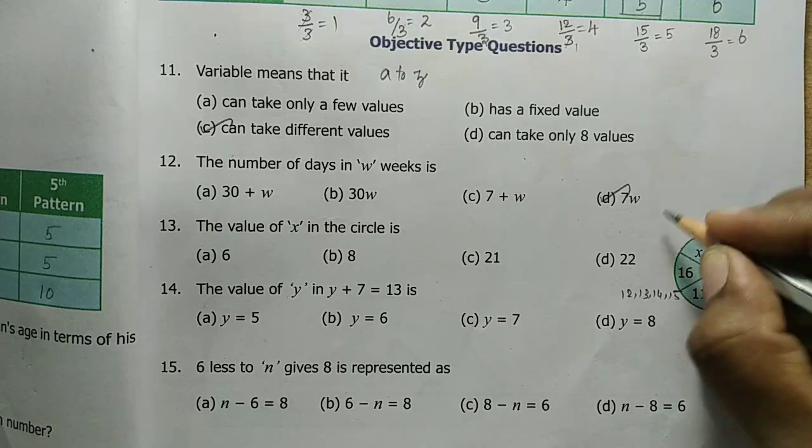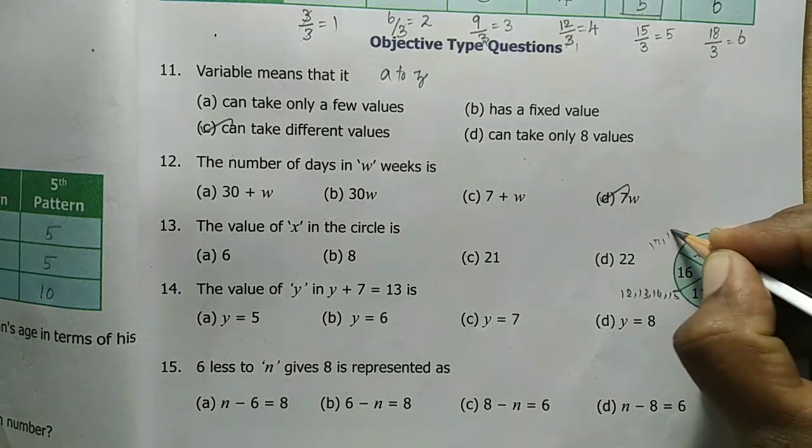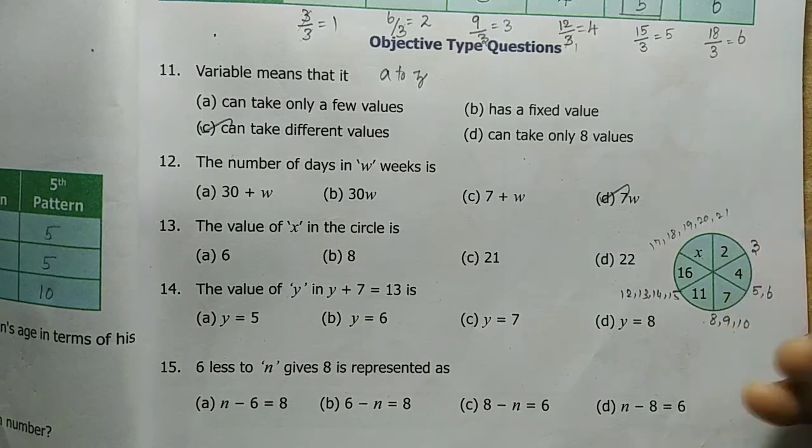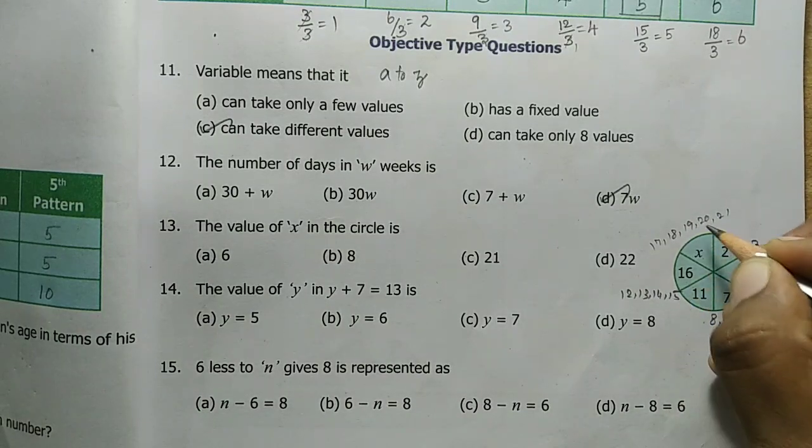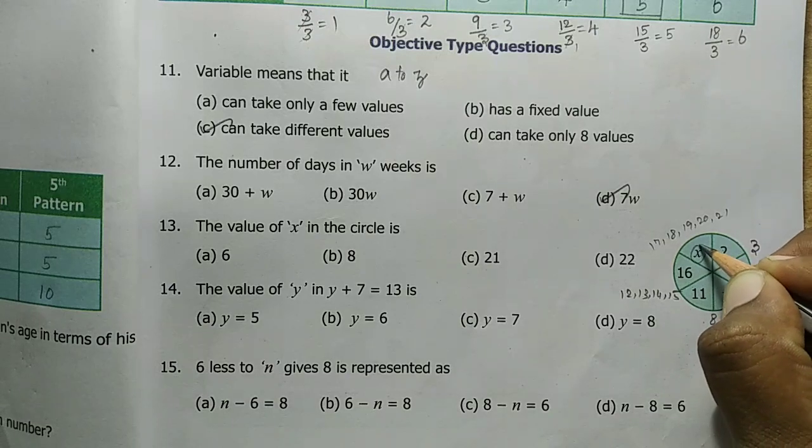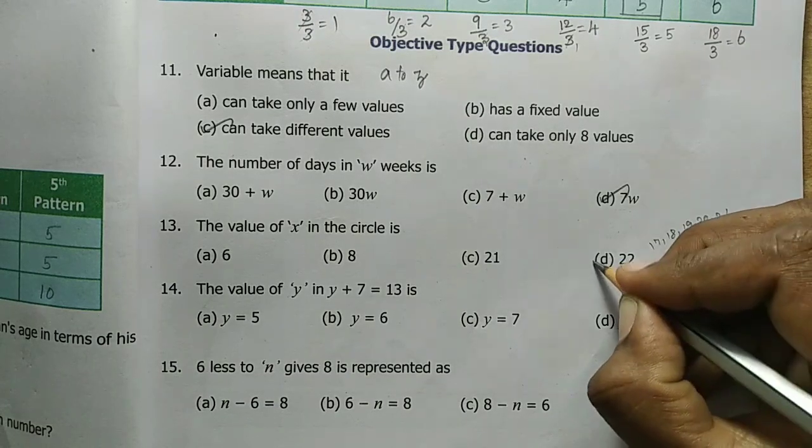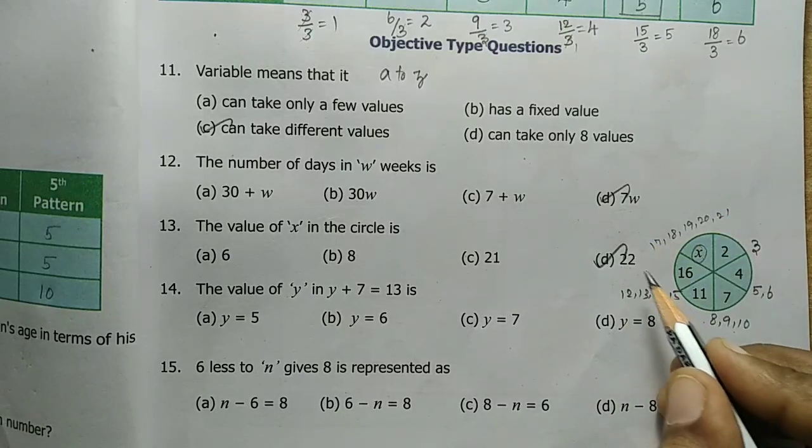Then 16, 17, 18, 19, 20, 21. Counting through the circle values: 21, 21, 21, 22. So the answer D, 22.